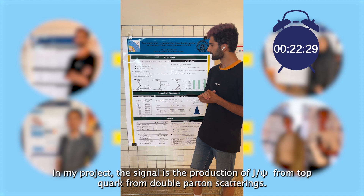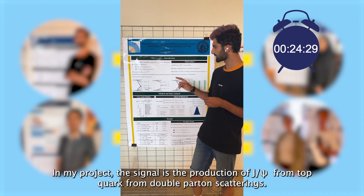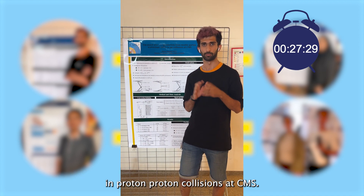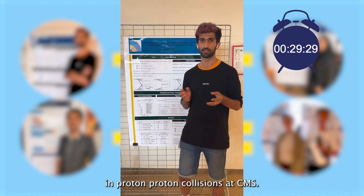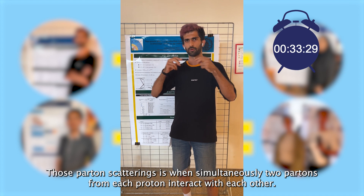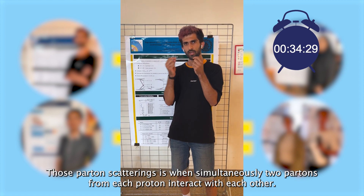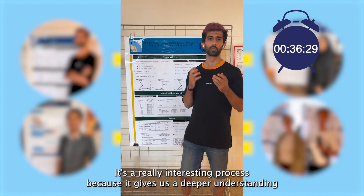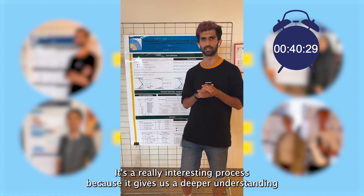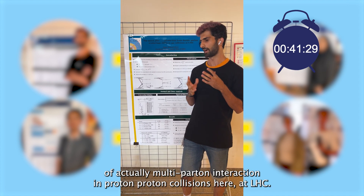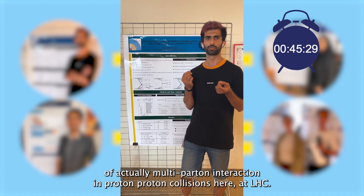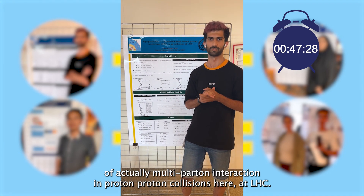In my project, the signal is the production of J/PSI from top quarks from double parton scattering in proton-proton collisions at CMS. Double parton scattering is when simultaneously two partons from each proton interact with each other. It's a really interesting process because it gives us a deeper understanding of parton interactions in proton-proton collisions here at LHC.